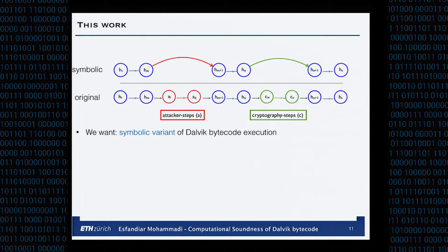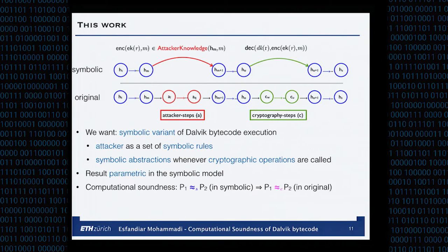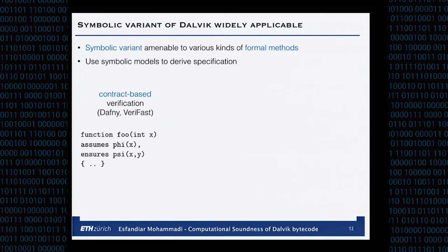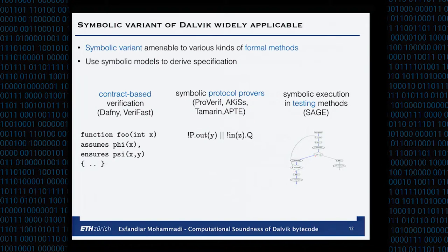We want a symbolic variant of Dalvik bytecode that considers the attacker as a set of rules, has symbolic abstractions whenever crypto is used, is parametric in the symbolic model, and has computational soundness. This symbolic variant can be used as a specification for the cryptography being used, for contract-based verification (as Bart Jacobs has done with crypto specifications), and in symbolic protocol provers like ProVerif, Tamarin, or AKISS. It can also be used in symbolic execution for testing methods, useful for generating inputs for network messages since the attacker in the symbolic model can be represented concisely with a few rules.